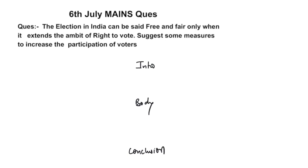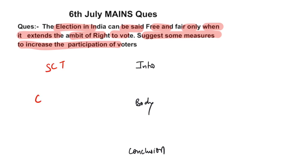The main question given yesterday says that elections in India can be said free and fair only when they extend the ambit of the right to vote — suggest some measures to increase the participation of voters. You can start the introduction by stating that voting is the most fundamental pillar of democracy. You can also give reference to the social contract theory, where the relation between the citizen and the state has been made — citizens give allegiance to the state and in turn can ask for accountability, which is regularly done during elections. In order for this to be effective, the free right to vote is also essential.